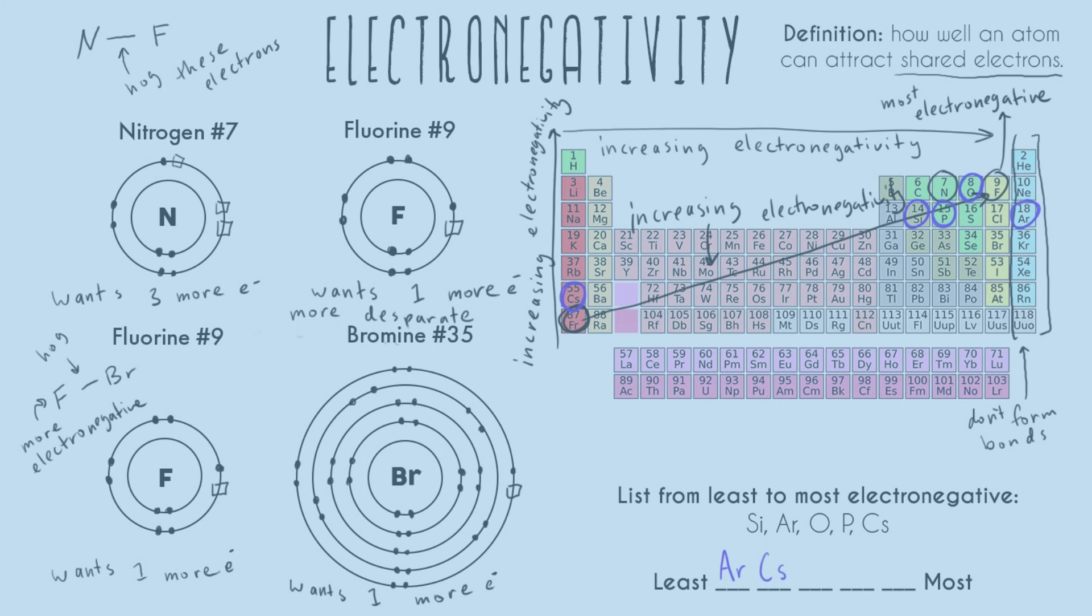And then we're up here with our trend, so just following it. Silicon, that has four electrons as opposed to phosphorus is five. They're both on the same row. And then our most electronegative for this problem is oxygen, that's clearly the most to the top and the most to the right.